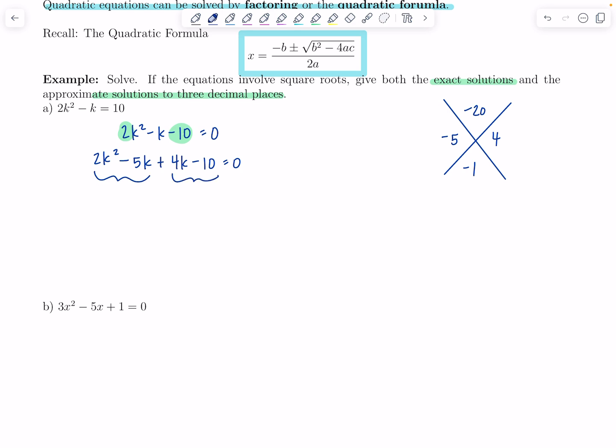Now that we have four terms, we factor by grouping. So we have k times 2k minus 5 plus I can take out a 2 and then again I have 2k minus 5. No surprise, equals 0. Here's my common factor. So I take out 2k minus 5 and I'm left with k plus 2.